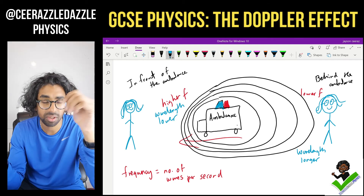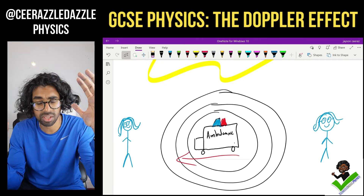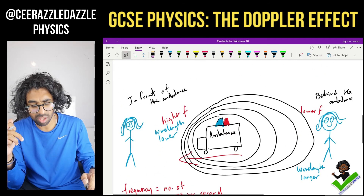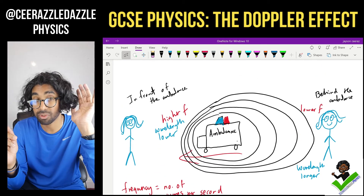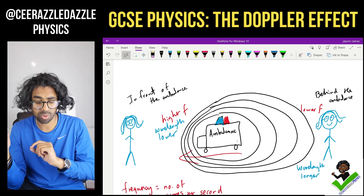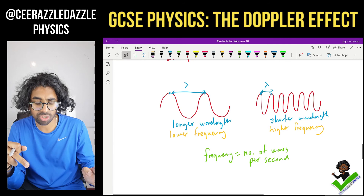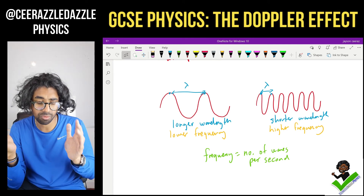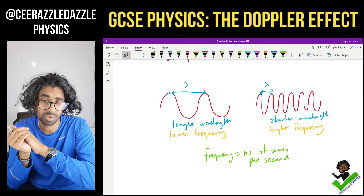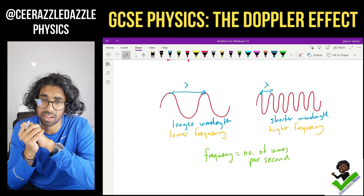Quick recap: if a source like an ambulance is giving off sound waves and it's not moving, the sound waves are equal on both sides. If you're standing in front of the source, the frequency will increase and the wavelength gets lower. If you're behind it and it's moving away, the frequency gets lower and the wavelength gets longer. Frequency is the number of waves per second, and frequency and wavelength are inversely proportional. That's it for another session — see you next time, goodbye!